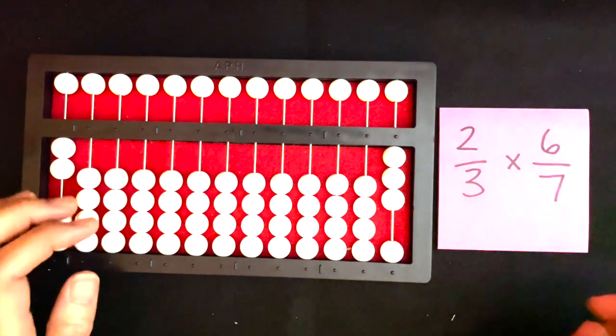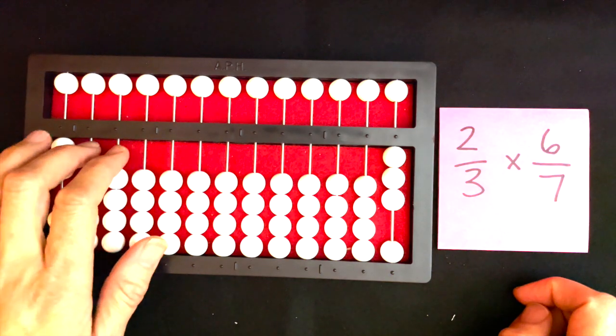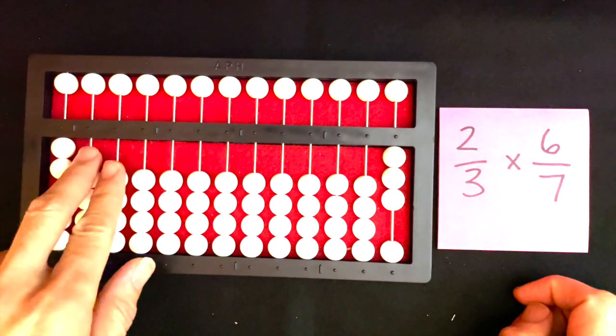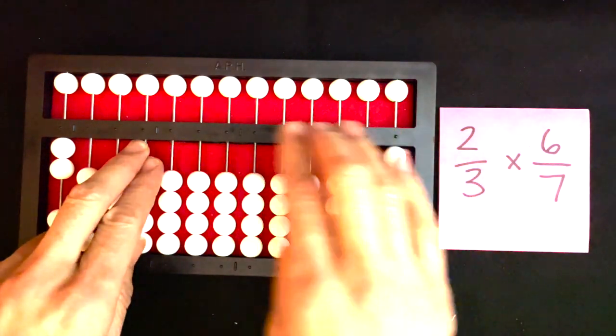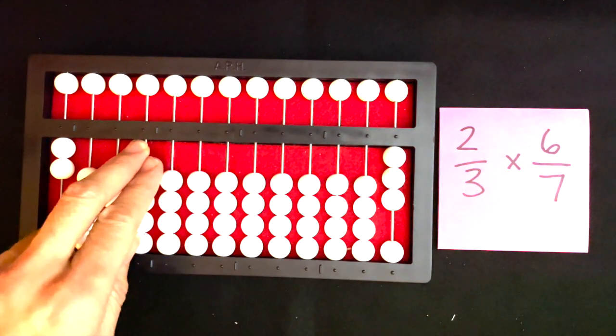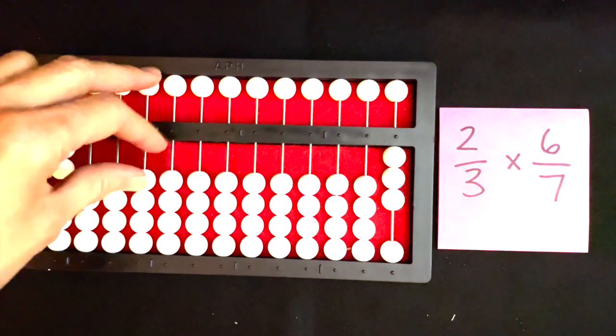Next, I'm going to set six-sevenths. I'll skip two rods on the left-hand side of my abacus and set the six in the units rod of the billions period.